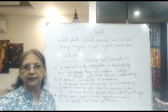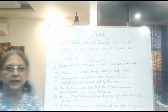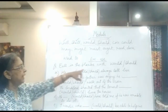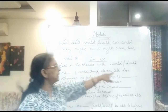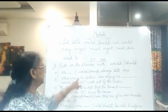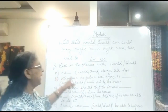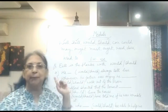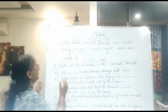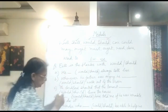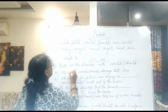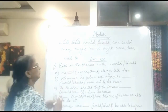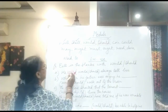Now let us practice one exercise. Fill in the blanks with would or should. First one: he dash always tell lies. You have to tell whether it is would or should. It is showing a past habit, so we will write would. He would always tell lies.